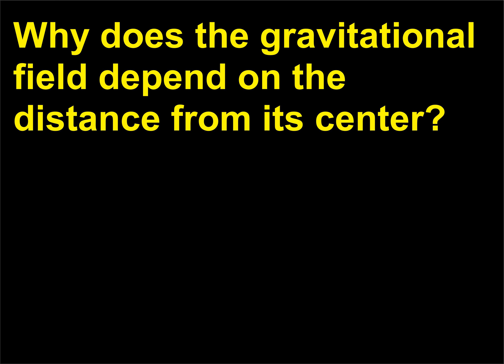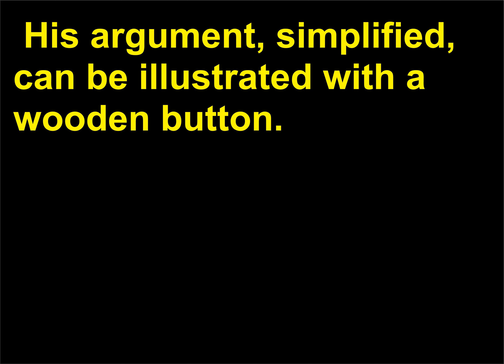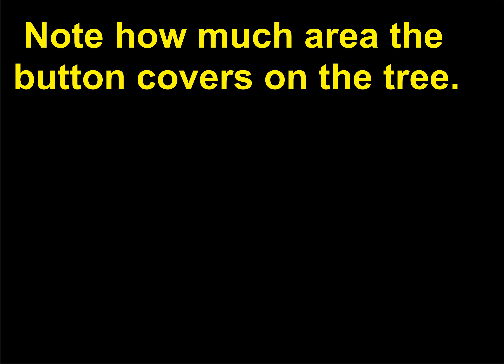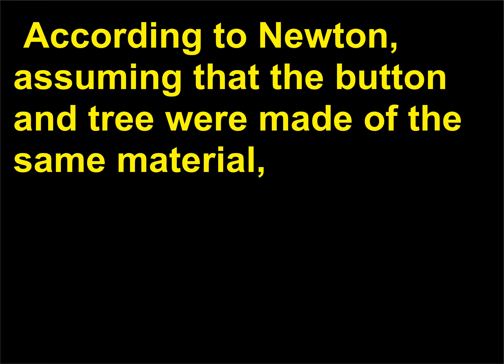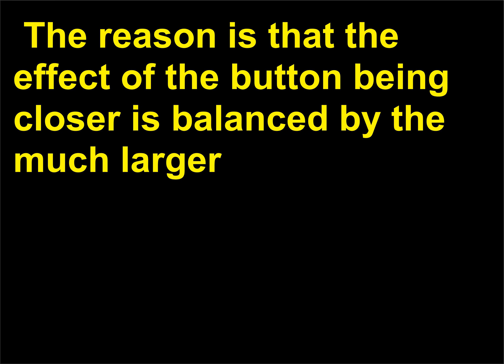Why does the gravitational field depend on the distance from its center? Newton recognized this problem and had to develop a new mathematics — integral calculus — to solve it. His argument, simplified, can be illustrated with a wooden button. Hold it at arm's length in front of a window so you can see a tree. Note how much area the button covers on the tree. According to Newton, assuming the button and tree were made of the same material, the force of attraction of the button on you is exactly the same as that of the part of the tree the button covers. The reason is that the effect of the button being closer is balanced by the much larger mass of the tree segment it obscures.